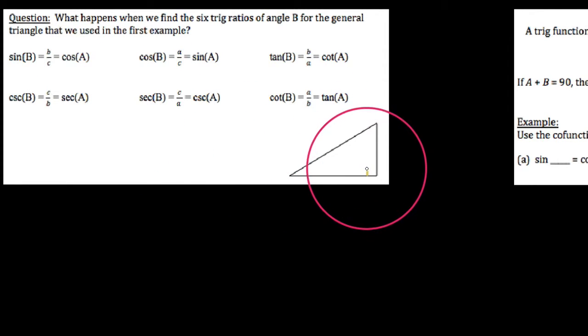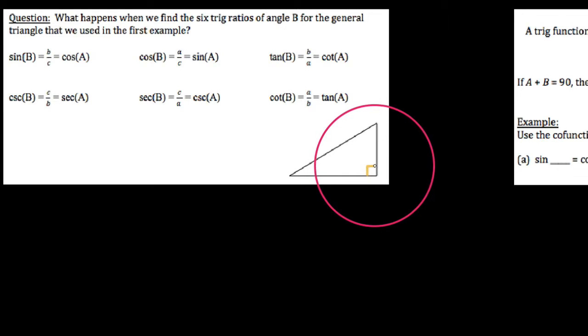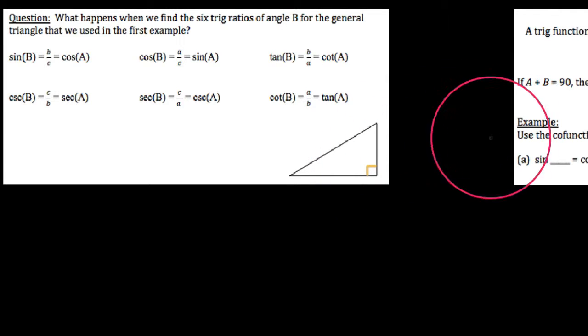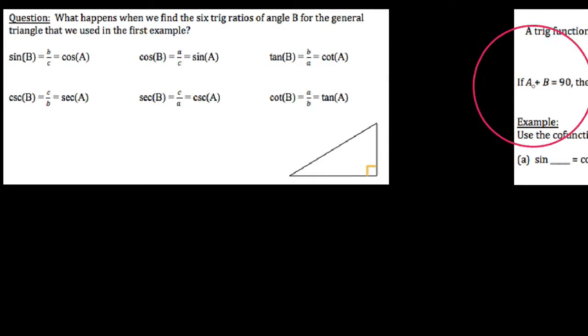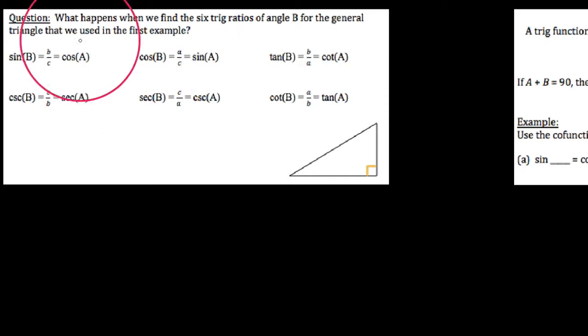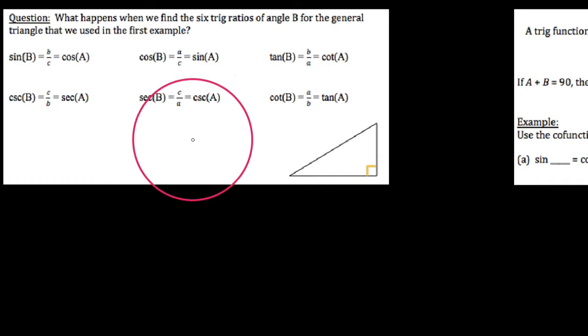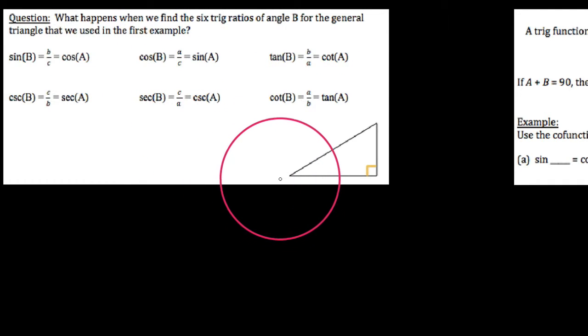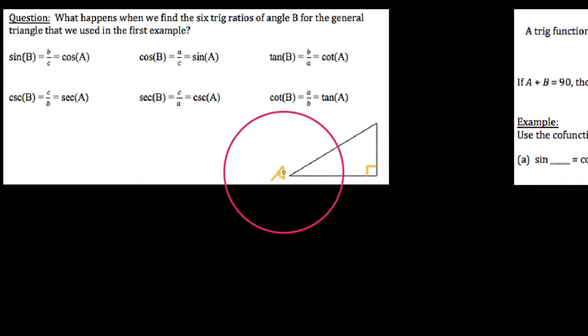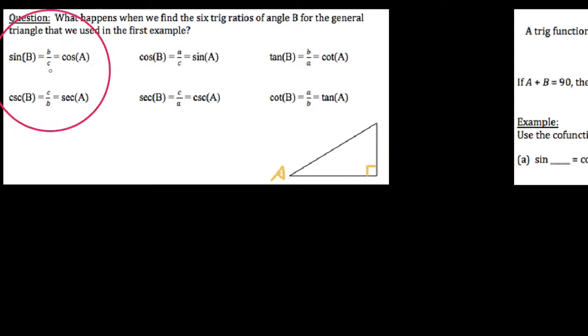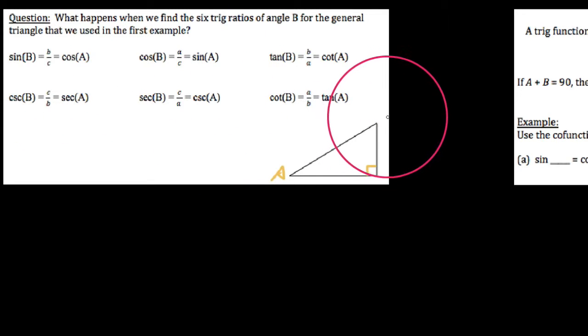There's a really cool and nifty theorem called the co-function theorem that we're going to refer back to a lot this year, so I want to point that out here. We'll look at what happens when we find the six trig ratios of angle B for the general triangle that we used in the first example, where we had done the six trig ratios of angle A.